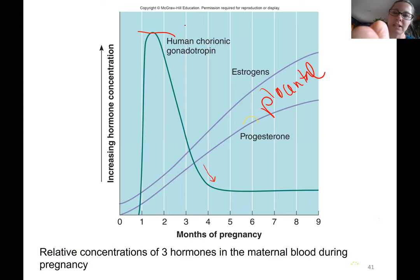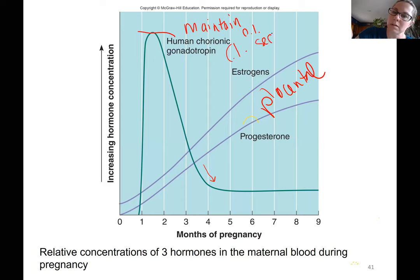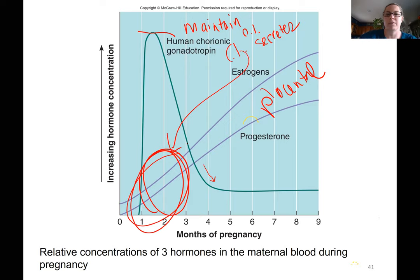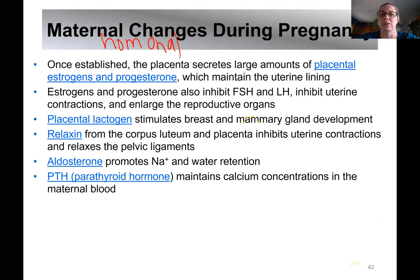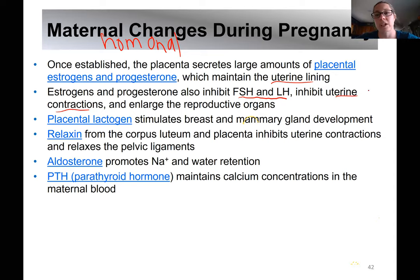HCG maintains the corpus luteum, and the corpus luteum secretes estrogen and progesterone during the early period. As those levels rise, that comes from placental hormones. The placenta produces progesterone and estrogen — we call those placental estrogen and placental progesterone — which maintain that lining and prevent menstruation. Estrogens and progesterone inhibit FSH and LH, and progesterone also inhibits uterine contractions. You don't want contractions until birth.